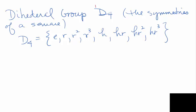I want to spend a couple of minutes on the dihedral group D4, which we discussed in class today. It is the group of symmetries of a square — a group of functions that map the square back onto itself. We found that all eight symmetries can be expressed in terms of R, a 90-degree rotation, and H, one of the flips.